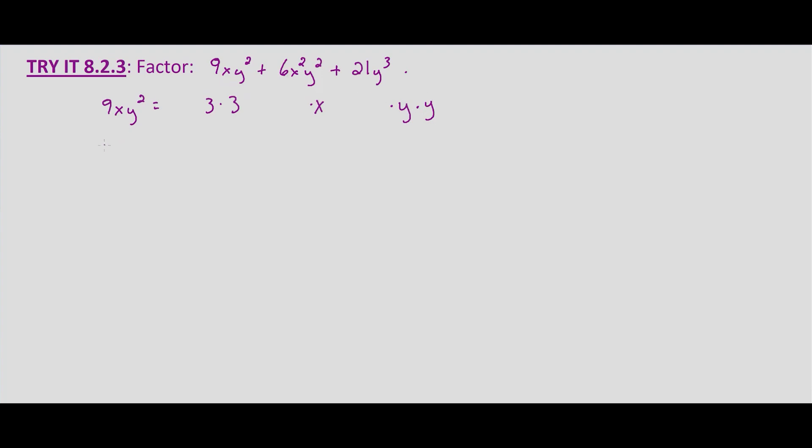Now we'll look at 6x²y², so 6x²y² equals 2 times 3 times x times x times y times y.